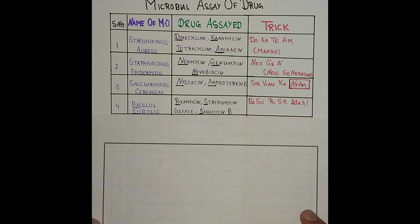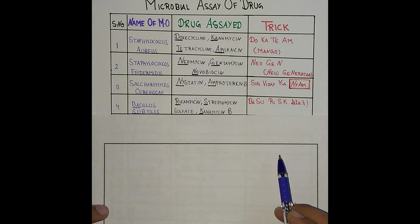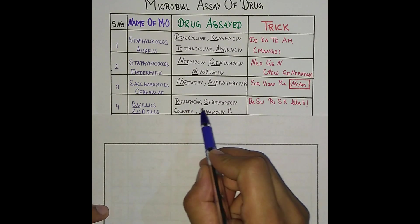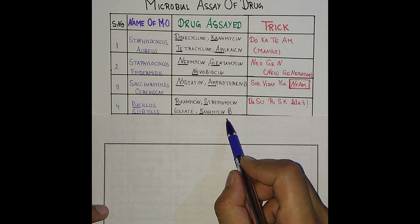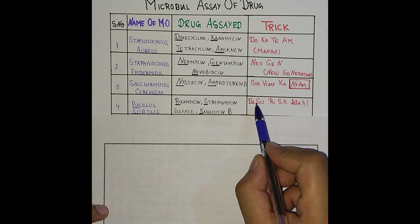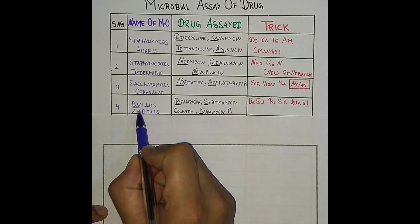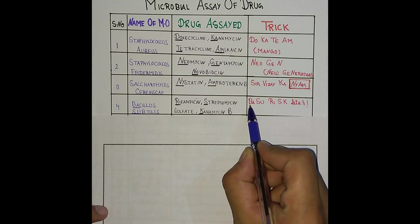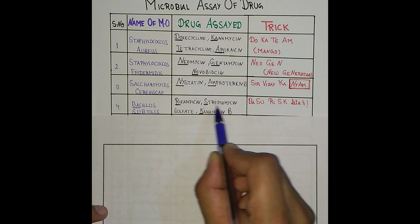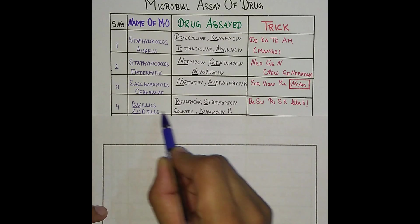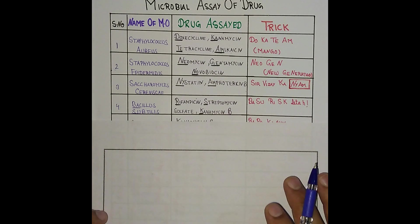The next one is Bacillus subtilis. The drugs for Bacillus subtilis are Rifampicin, Streptomycin sulfate, and Kanamycin sulfate. The trick is 'Basu risk leta hai': BA for Bacillus, SU for subtilis, RI for Rifampicin, S for Streptomycin, K for Kanamycin — 'Basu risk leta hai.' Very easy to remember.